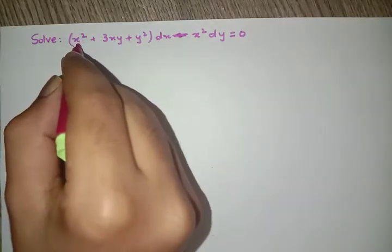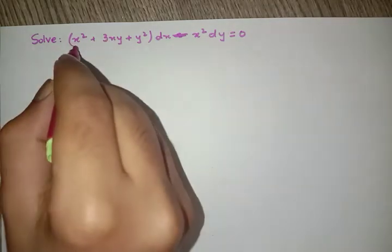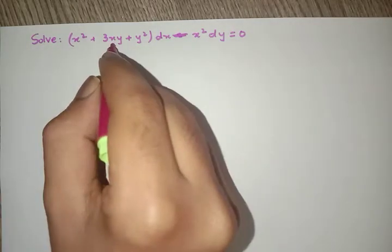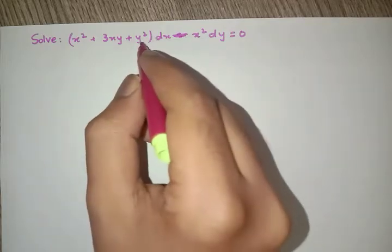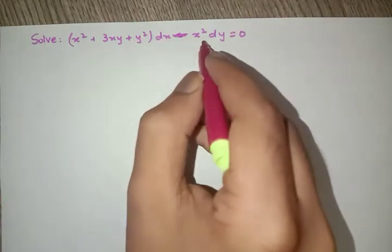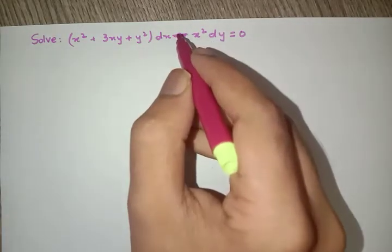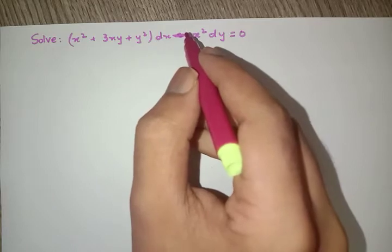Because the order of x and y here are 2, here also it is 2, here it is 1 plus 1 which is 2, here also it is 2, and here also it is 2. And the order of dy/dx is 1, so we can say this function is a homogeneous equation.